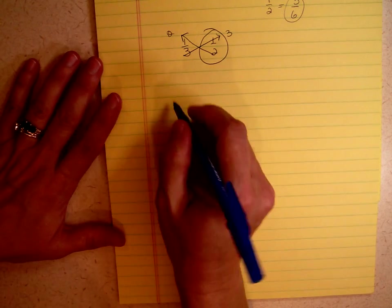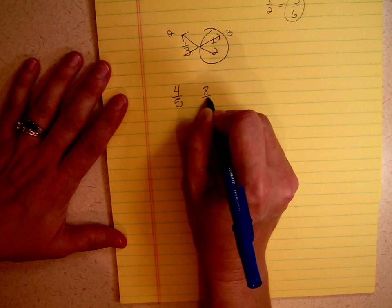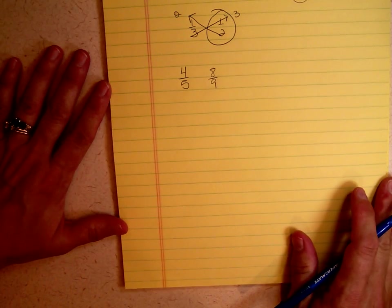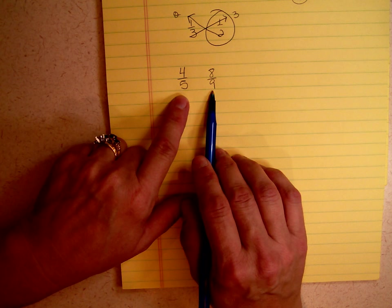Let's try that again with different numbers: 4 fifths and 8 ninths. If we wanted to use the traditional algorithm, we would have to find the least common denominator of 5 and 9.